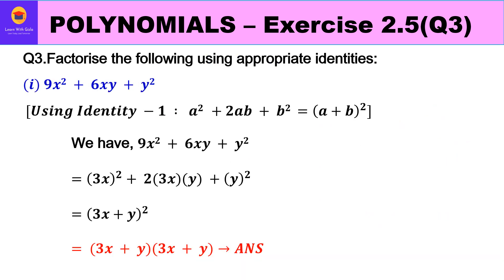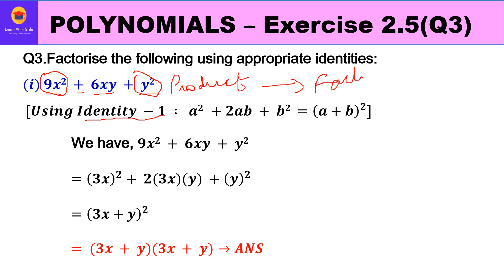The first part is 9x² + 6xy + y². Whenever we have two square terms with a plus sign in the middle, we use Identity 1 to factorize. Comparing this product with Identity 1: the first term is 9x², which is a square, y² is b square, and if the middle term is 2ab, then the factors are (a + b)².